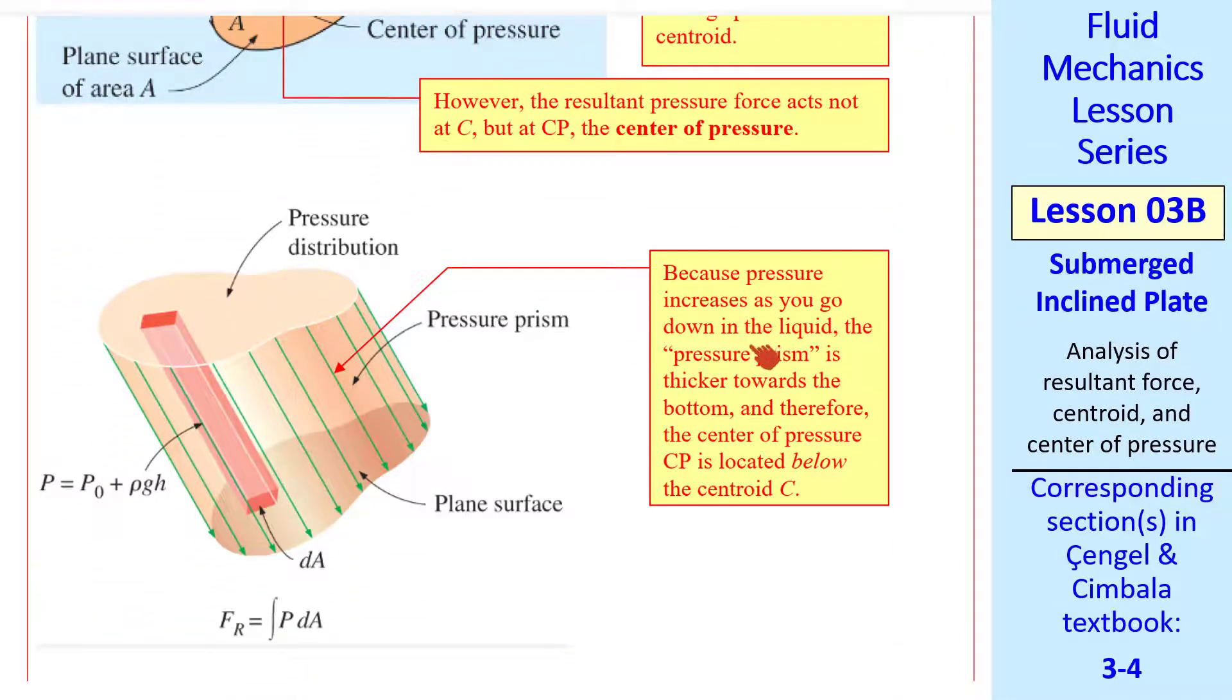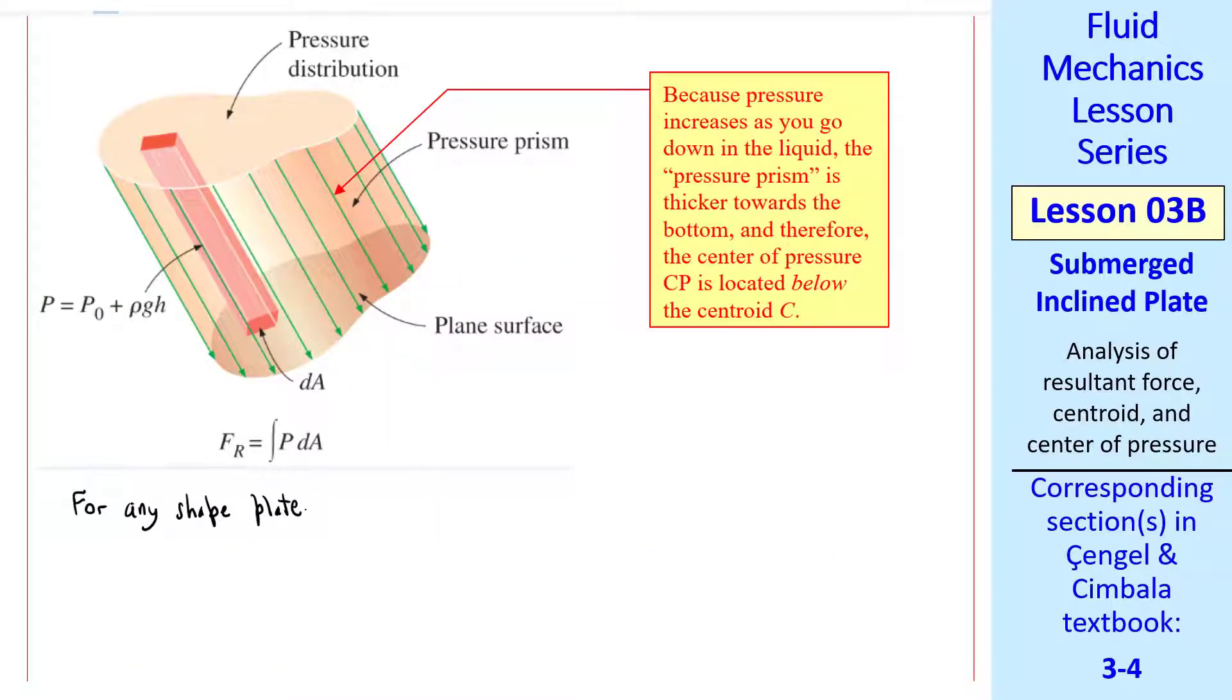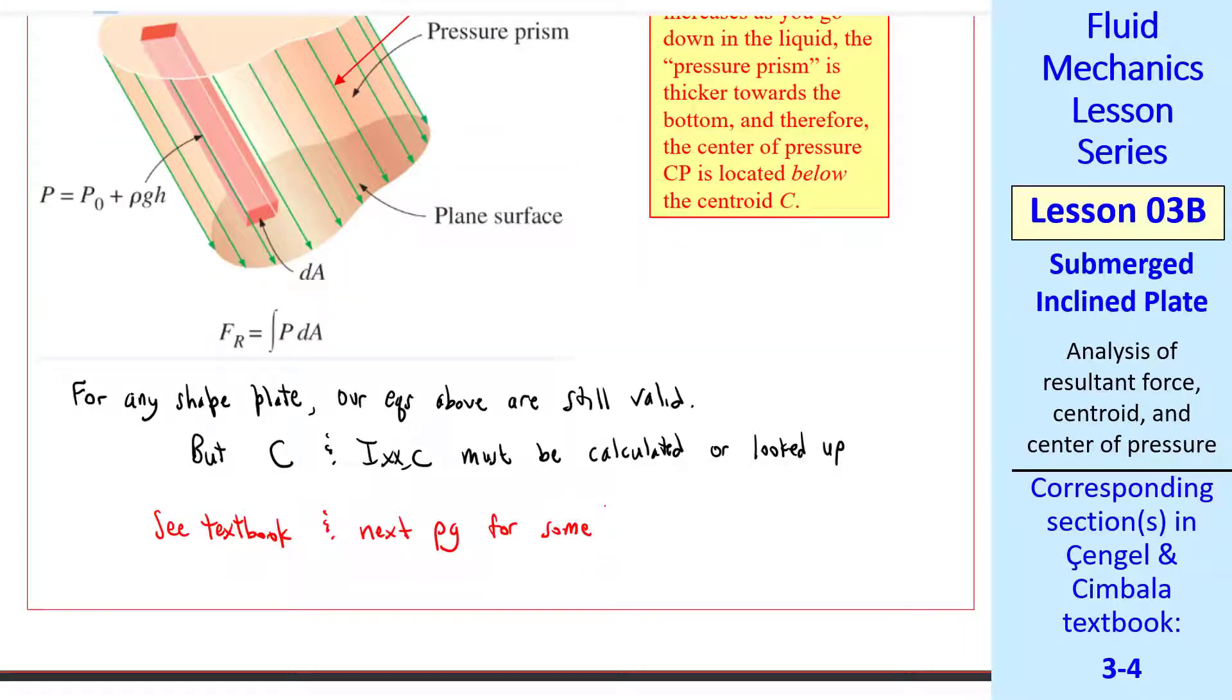This may help you understand that. We call this a pressure prism, where to get the resultant force, we have to integrate pressure times dA over the whole surface. So for some little element dA, the pressure prism is the pressure acting on that element of area, P naught plus rho GH. Since the pressure is lower at the top of the plate than it is near the bottom of the plate, CP is located below the centroid. For plates of any shape, our equations above are still valid, but C and IXXC must be calculated or looked up in some reference tables.